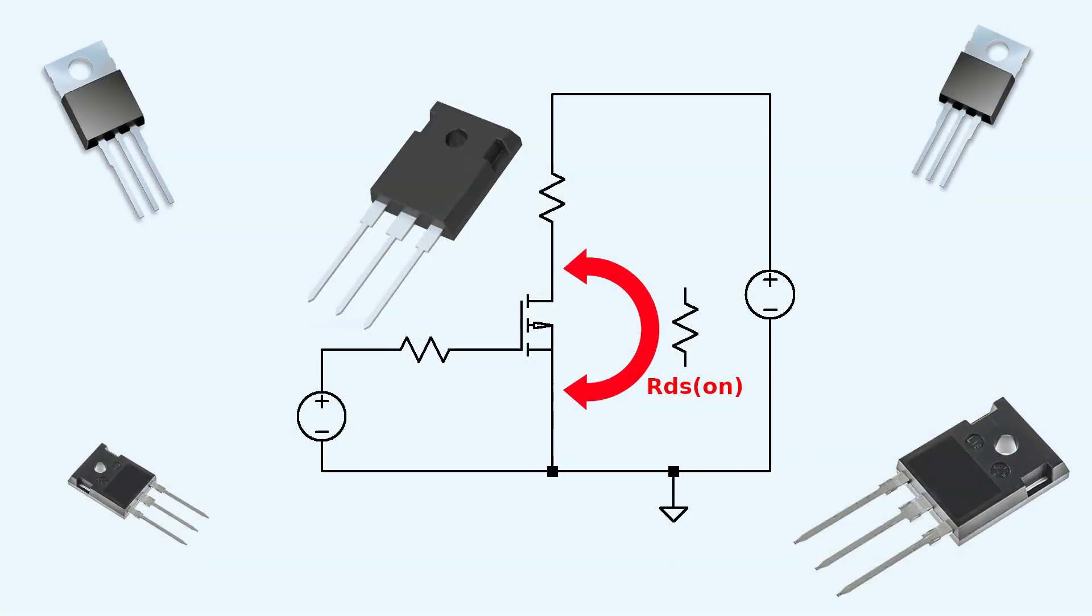This video provides a quick overview of a highly significant aspect of power devices, namely RDS(on). This is the value of the electrical resistance between the drain and source terminals of a MOSFET when a specific voltage is applied between the gate and source terminals to turn the device on.